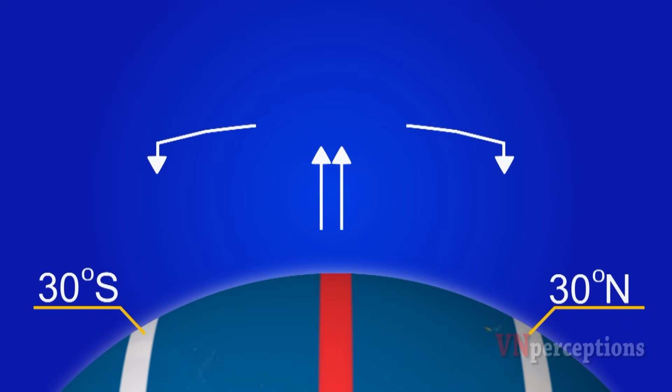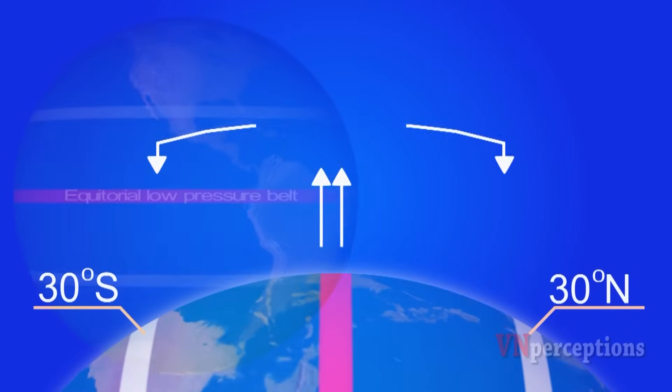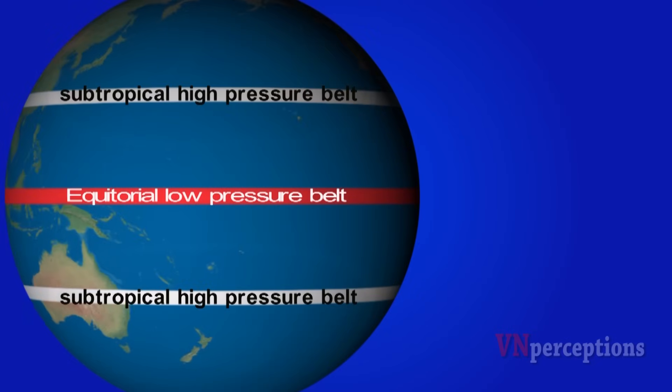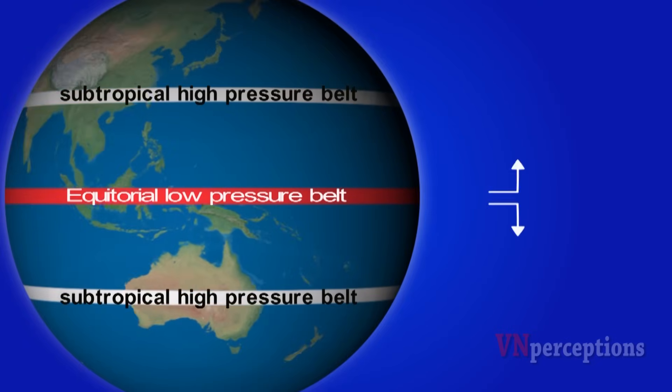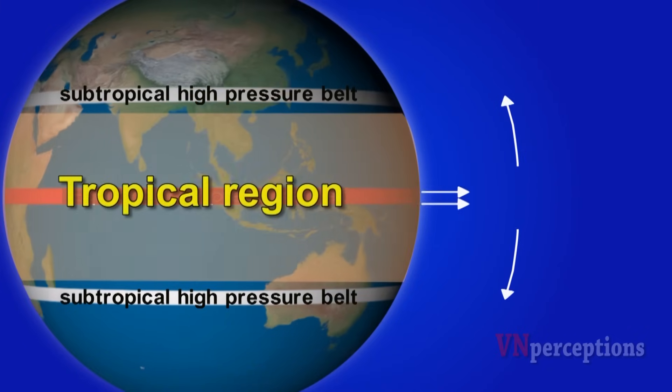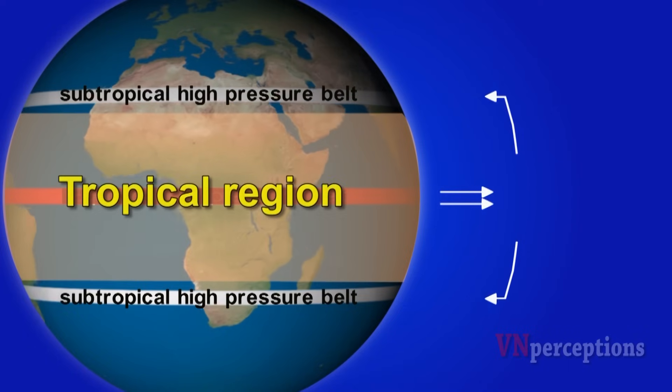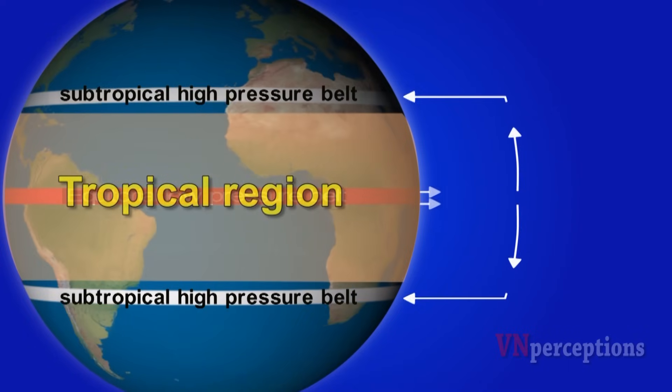At around 30 degrees north and south we have sinking air. This sinking air is cool air so it forms high pressure systems. These regions are called subtropical high pressure belts because these regions lie outside the tropical region and at the same time adjoining the tropical region.